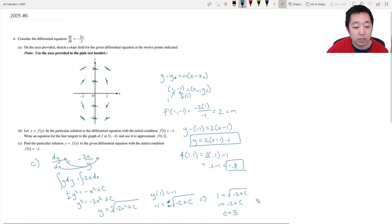So that means my final answer is y is equal to negative square root of negative 2x squared plus 3. Okay.